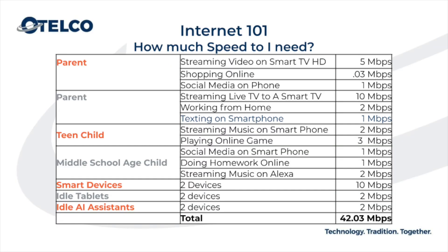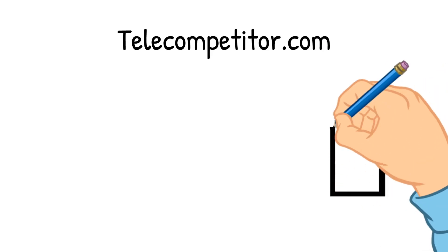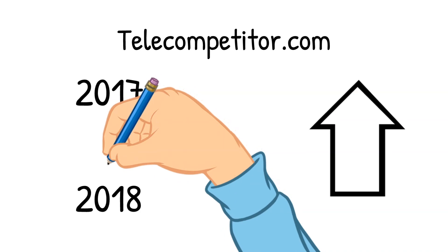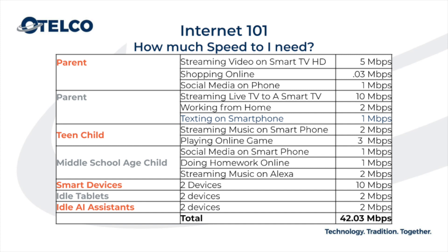Here are some of the most common uses of the internet and the amount of bandwidth they require. Any single activity isn't a big deal, but when many are happening at the same time it can really add up. According to telecompetitor.com, data over internet usage in the average household increased by 25% from 2017 to 2018, due to things like the addition of new devices and streaming more content in higher definition.